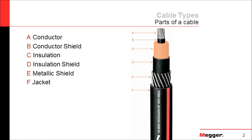And then last, we have our jacket. The jacket usually has information about the cable on it, like the manufacturer, the cable rating, or the insulation type.